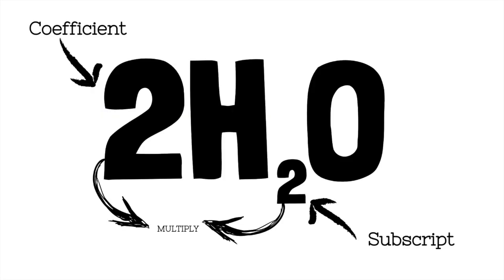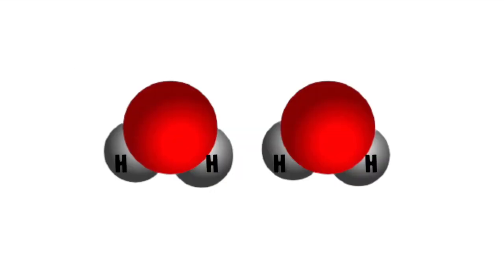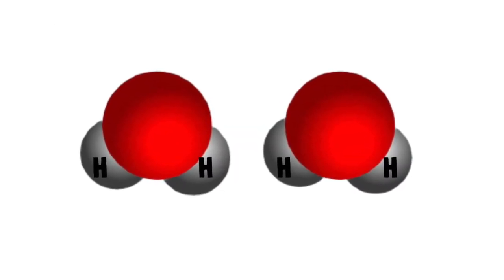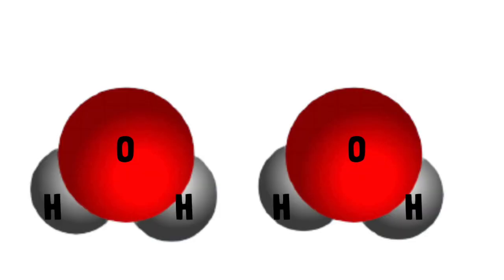So how does that work out? Well, we take the coefficient and we multiply it by the subscript. That's where we get the four hydrogens. Then we take that same coefficient and we apply it to the oxygen for a total of four hydrogens and two oxygens.